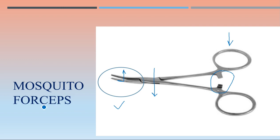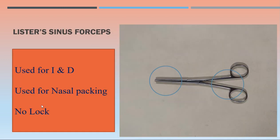The uses we will discuss in another video. This video very quickly covers just the identification part. Multiple revisions will make you perfect, at least in surgical instruments identification and their uses. So this one was mosquito forceps.